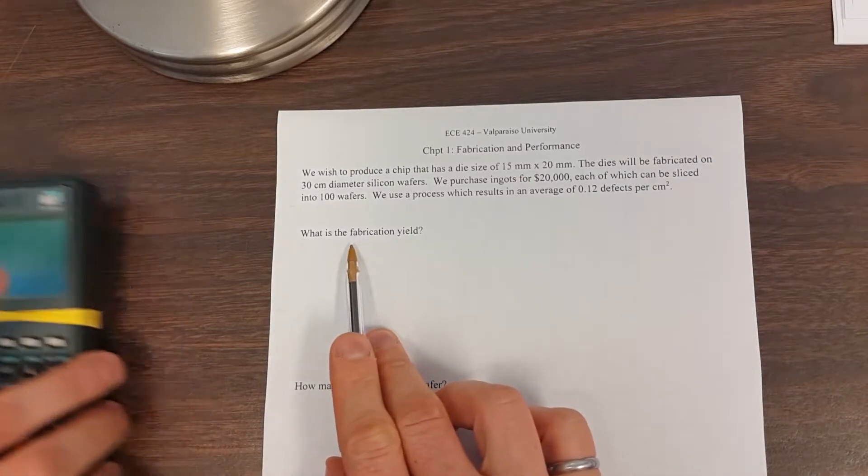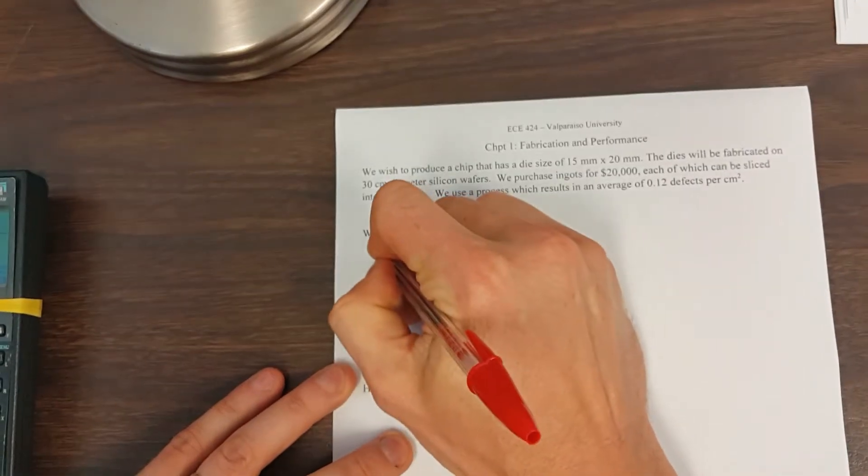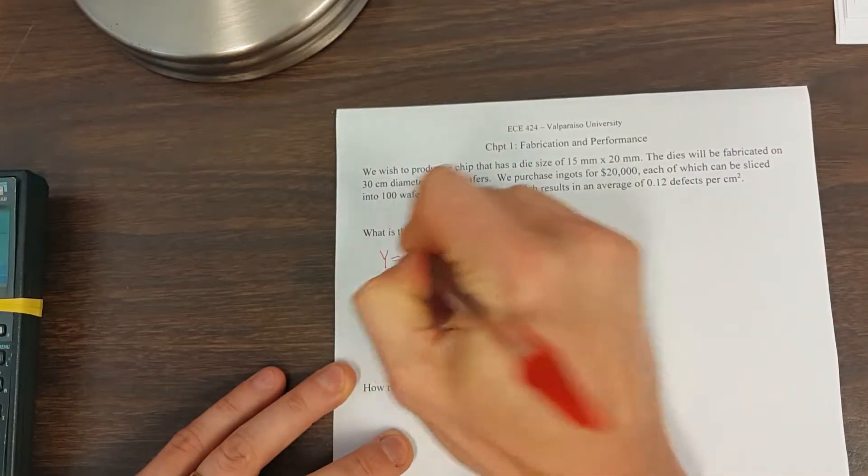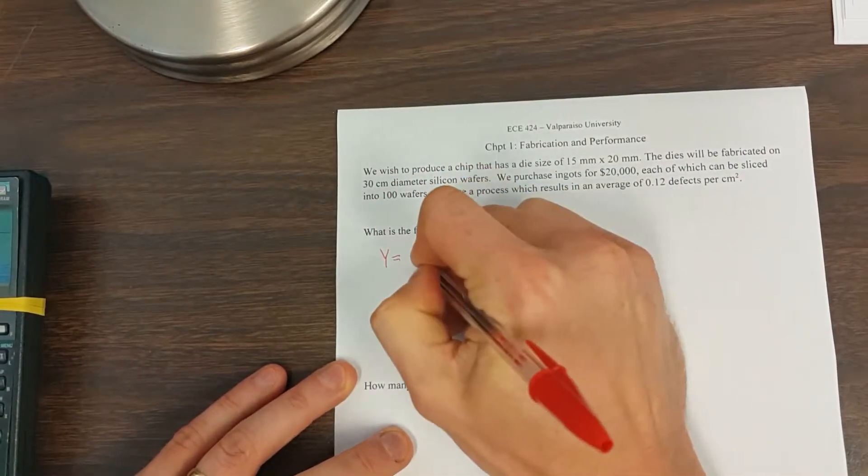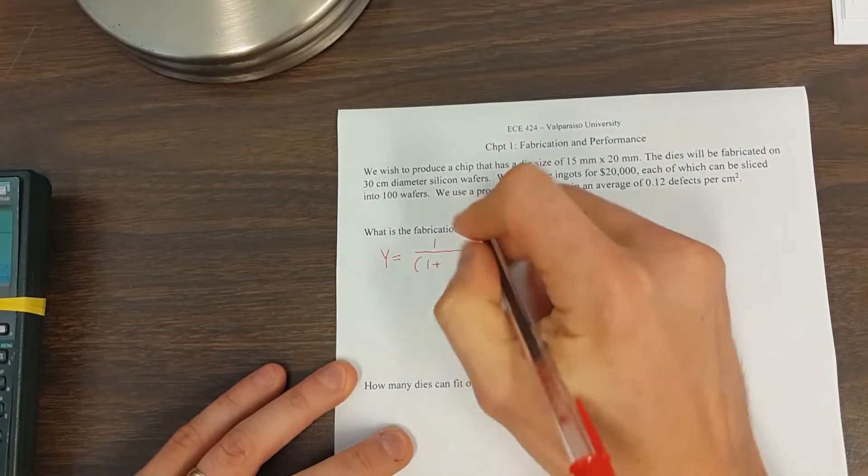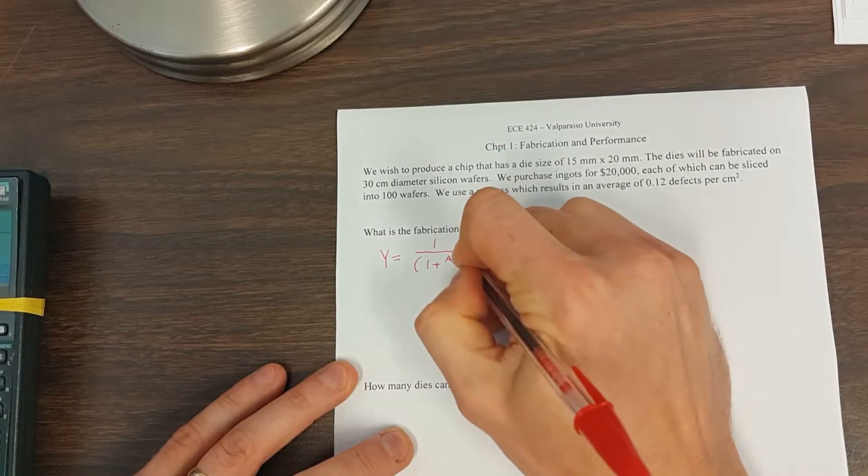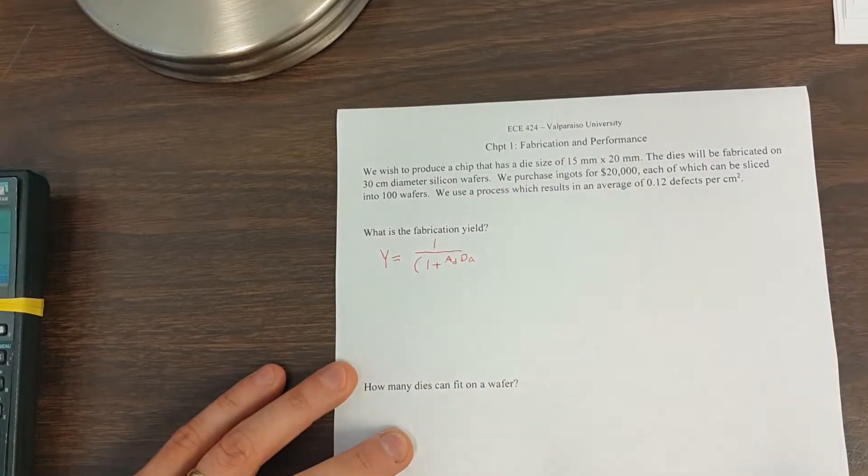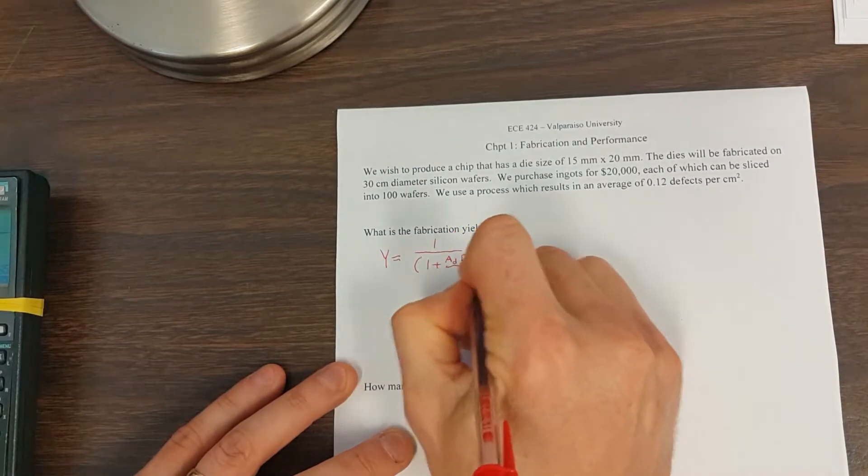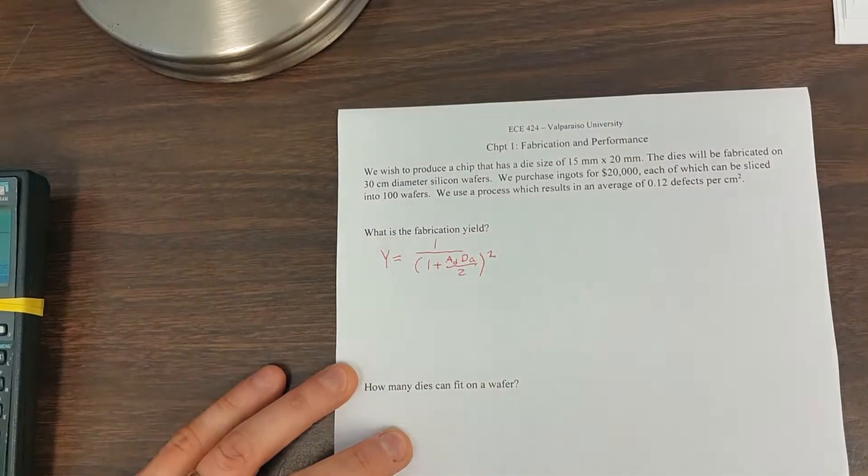When we have the fabrication yield, let's write down our primary equation for the yield. The yield is going to be 1 over the quantity 1 plus, now these are tricky units here, area of the die times the defects per area, this quantity divided by 2, and then take note, the whole quantity squared.